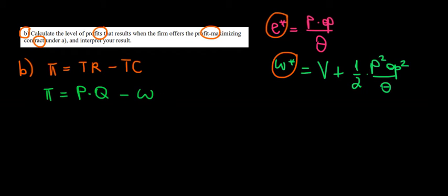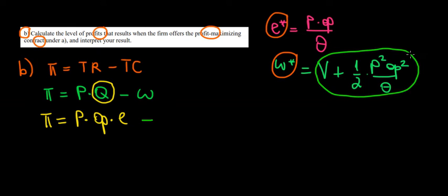Now we can substitute values because we know the quantity is a function of effort, which is theta times the effort. So we have profit equals the price times theta times effort minus the wage. And we know the wage because we calculated previously. This is the wage that we saw in the previous video. So we're going to substitute it over here, which is going to be V plus one over two times P squared times theta squared divided by theta.